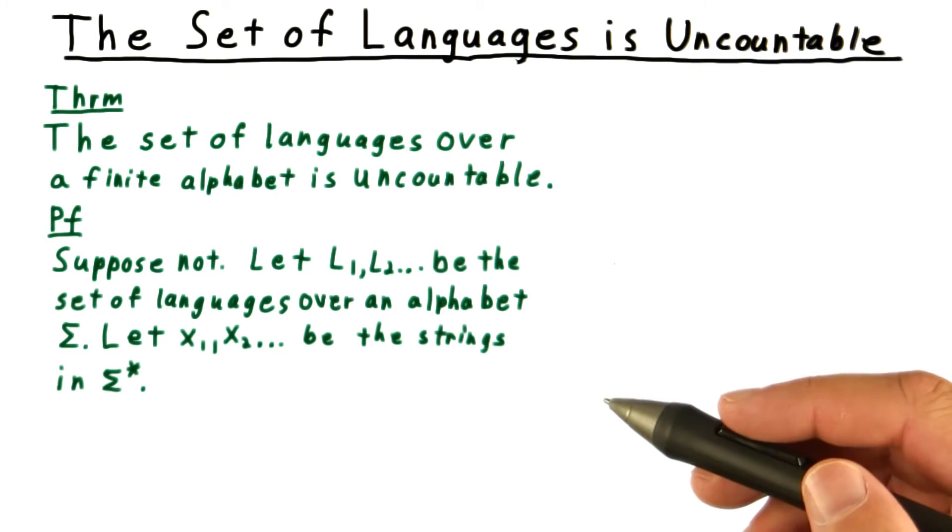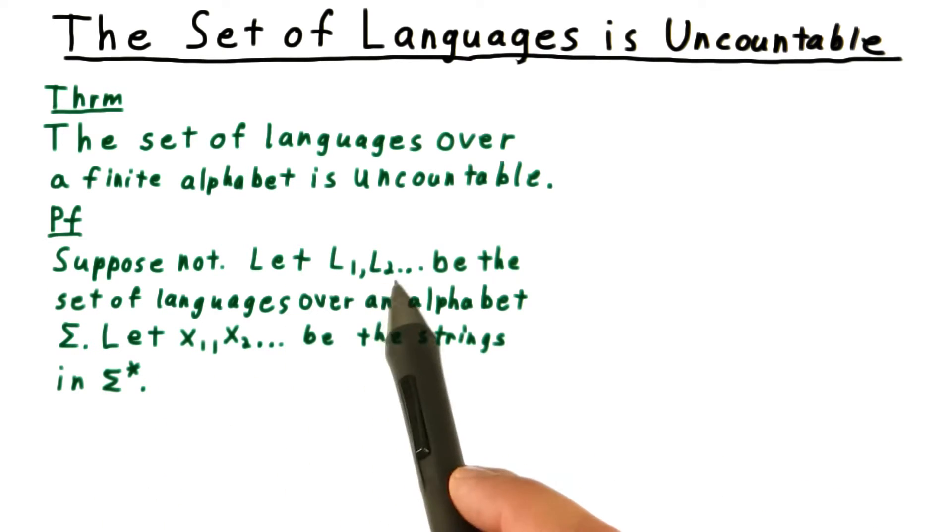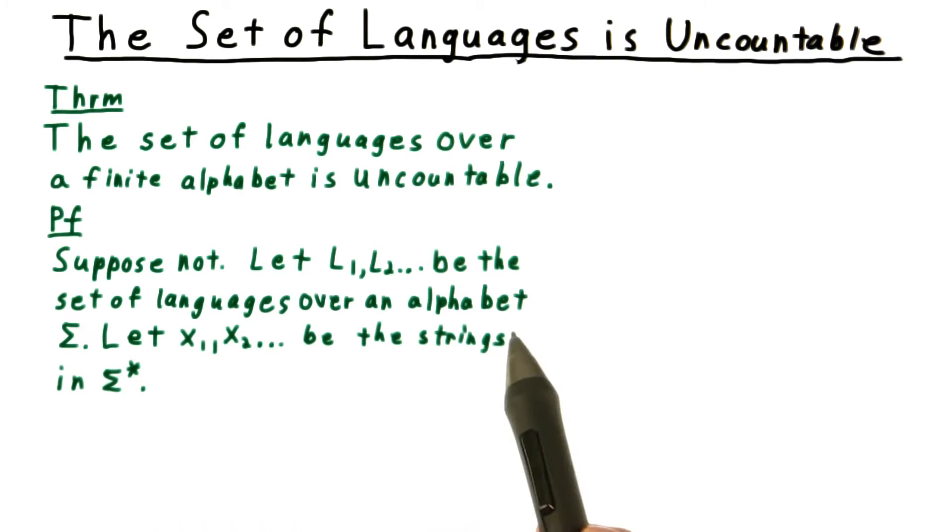We'll prove this by contradiction, so suppose not. That is to say, we'll let L1, L2 be the set of languages over an alphabet sigma. Here I'm giving them an enumeration. And we'll also let x1, x2, etc. be the strings in sigma star.